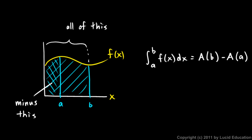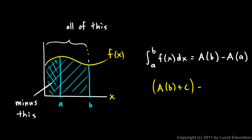One thing to note is that the constant of integration is gone. Remember, when we take an antiderivative we end up with +C. So really A(b) would be A(b) + C, and so would A(a). But watch: if we have A(b) + C minus A(a) + C, those C's cancel out — the plus C minus the plus C are gone. So we're just left with A(b) minus A(a). That's why the constant of integration doesn't show up when we evaluate using the fundamental theorem of calculus — the C's cancel out.